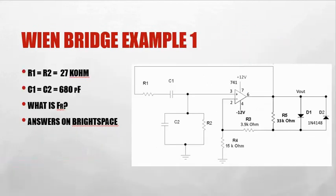Wien bridge example number one. This is for you guys to do on your own. R1 equals R2 equals 27k ohm resistor. C1 equals C2, which is equal to 680 picofarad. You put it in our formula, 1 over 2 pi RC. We end up with a frequency of resonance. The answers are on Brightspace.